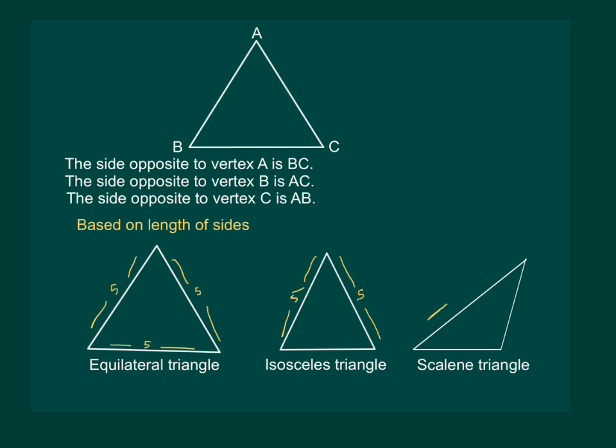For a scalene triangle, for example, if one side is 5 cm, the other can be 4 cm and another can be 6 cm.